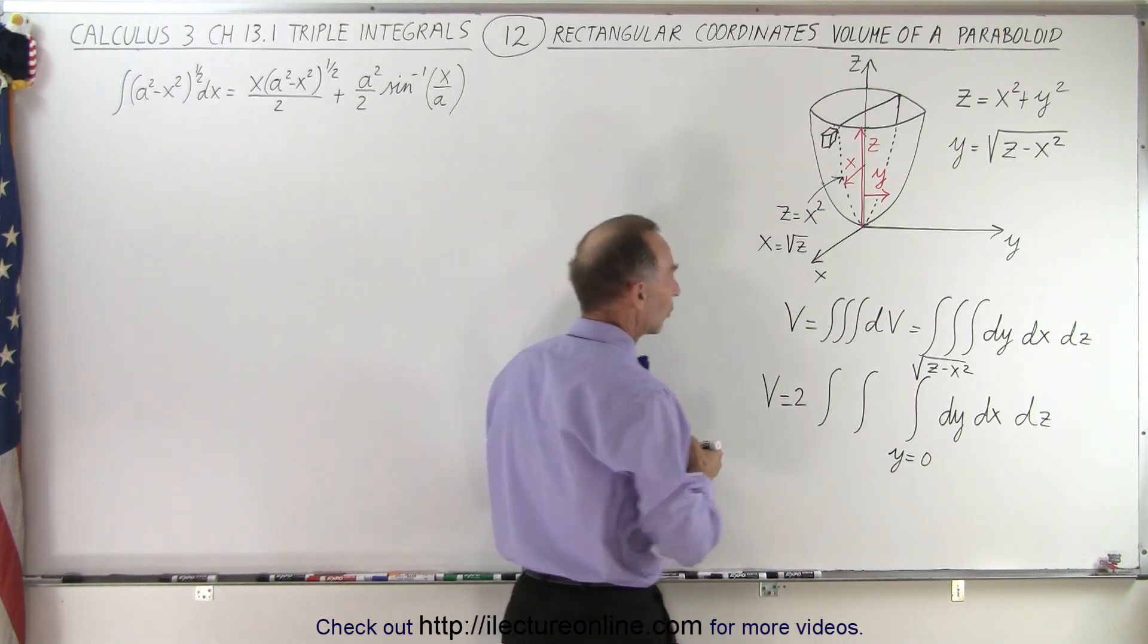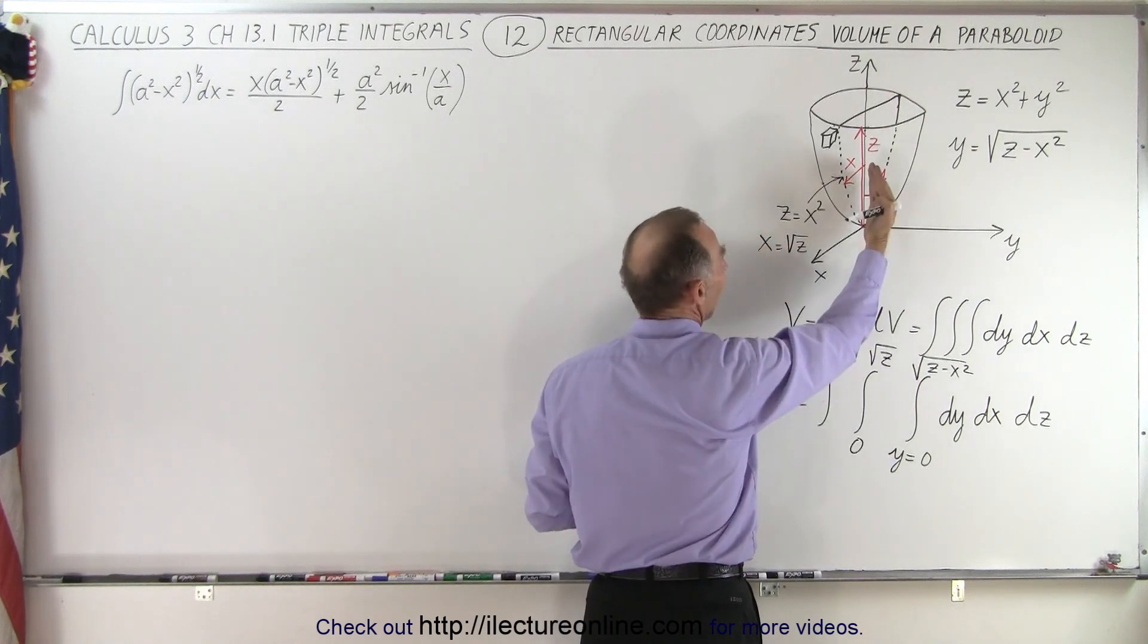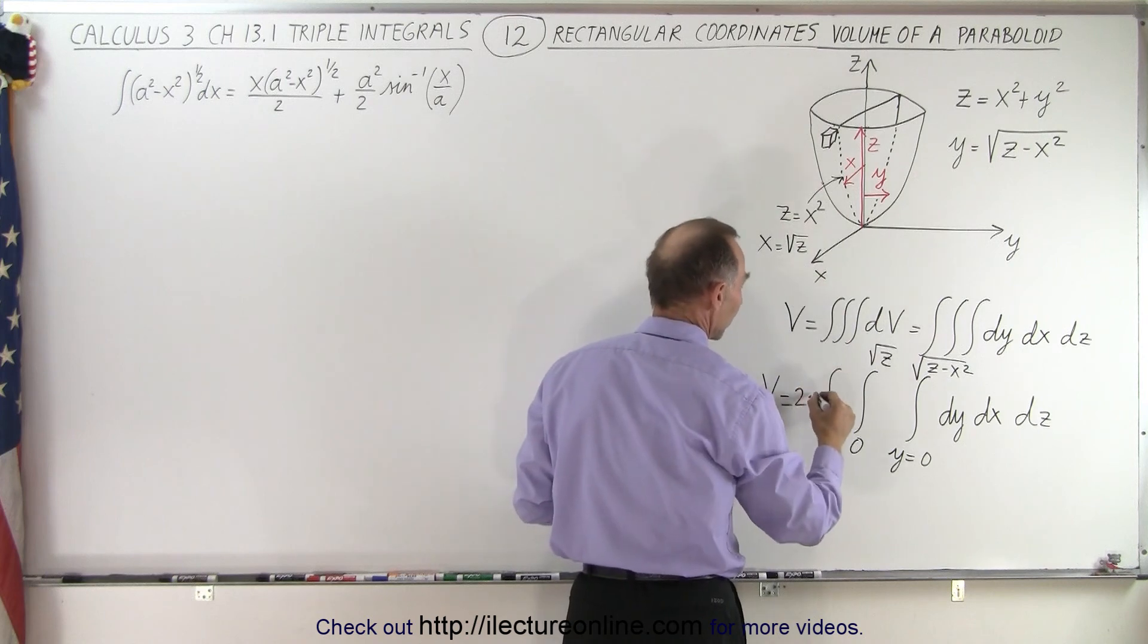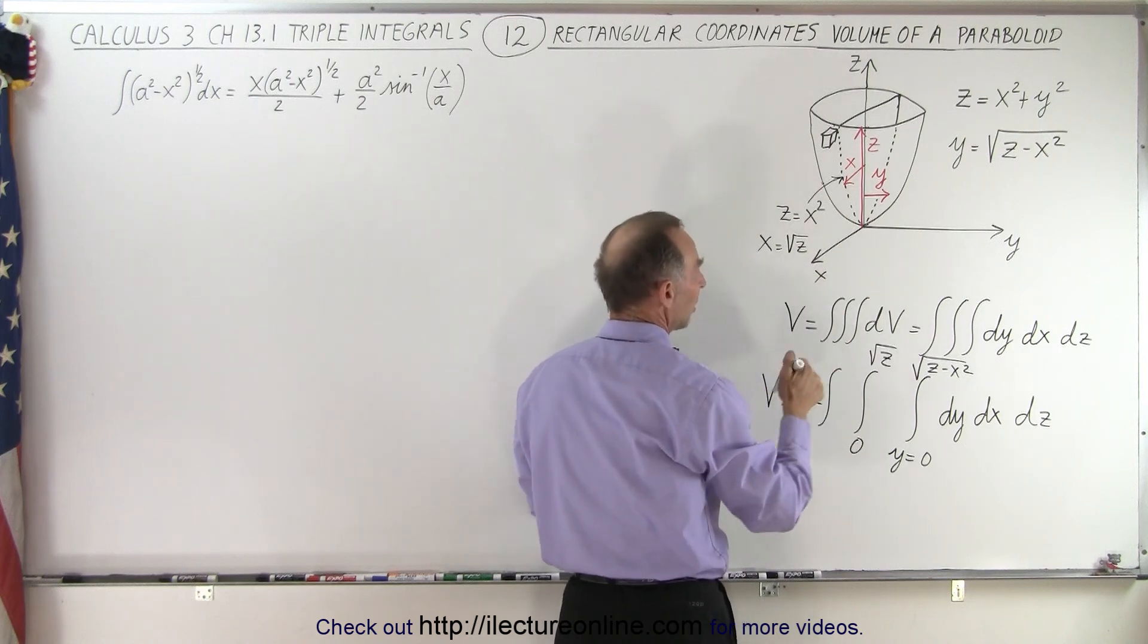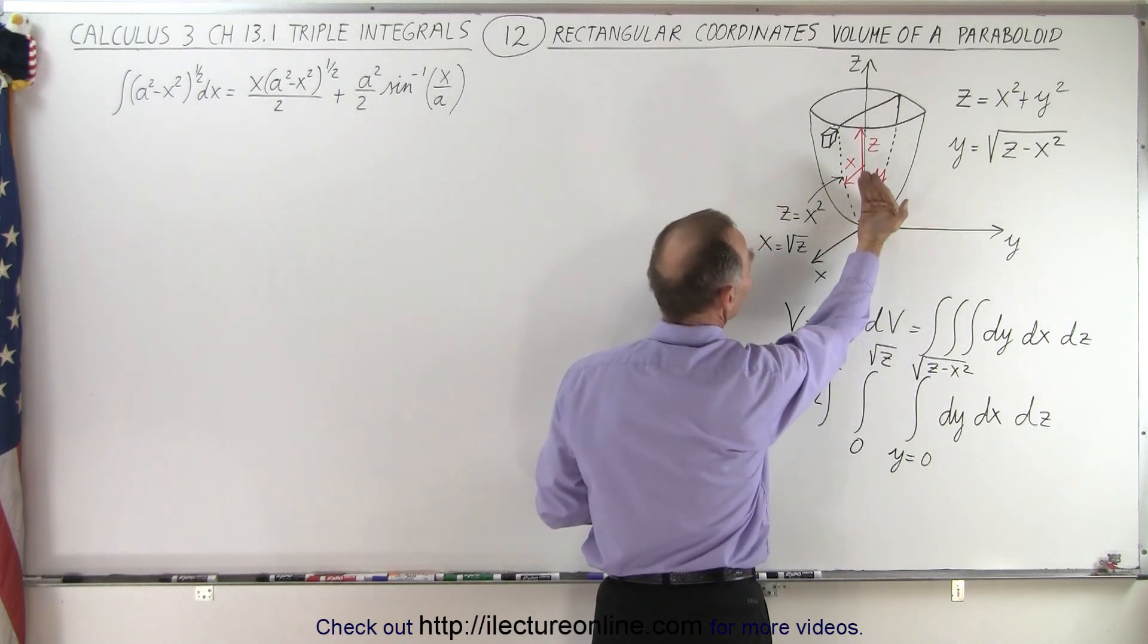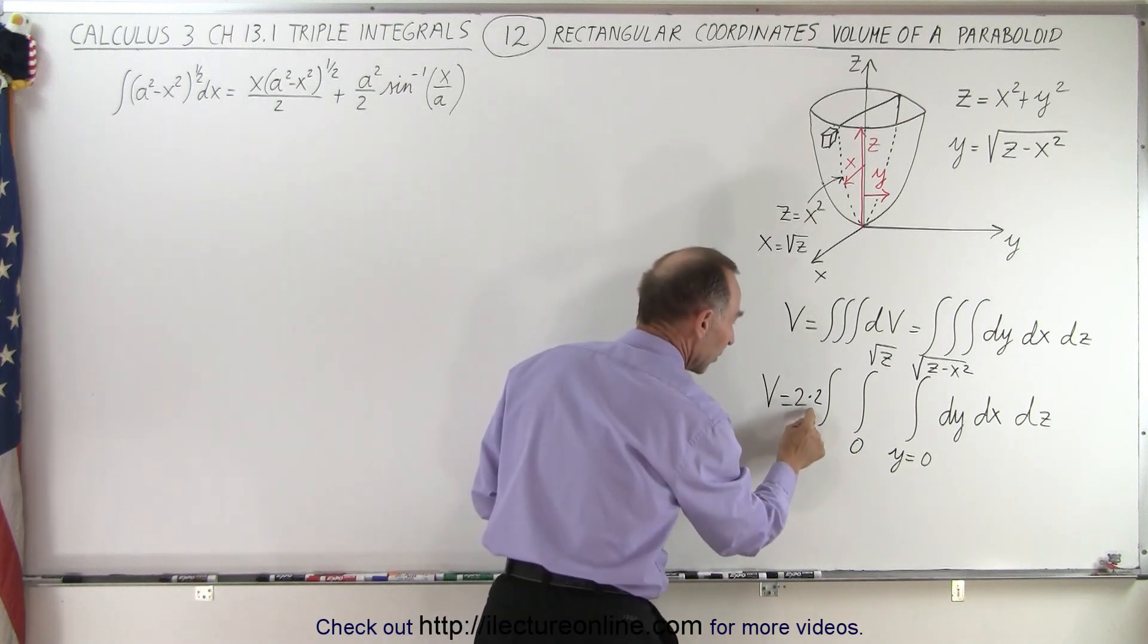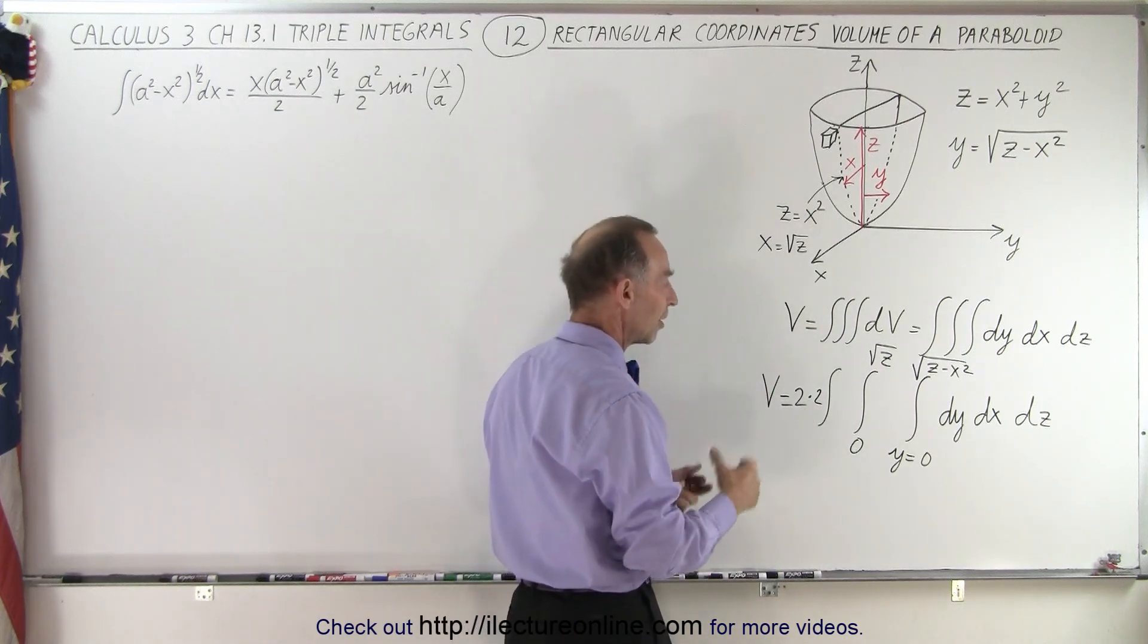So the x limits are going to go from 0 to the square root of z but again that only takes half the paraboloid so we have to multiply times 2 because essentially we're only taking the right half and the front half that's essentially one quarter of the volume of the paraboloid so we have to multiply times 4 to get the full volume.